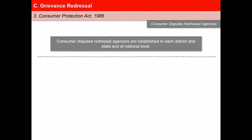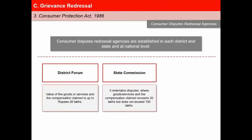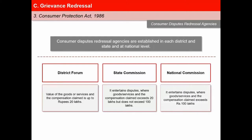Consumer Disputes Redressal Agencies are established in each district, state, and at national level. The District Forum has jurisdiction to entertain complaints where the value of goods or services and the compensation claimed is up to Rs. 20 lakhs. The State Commission is a redressal authority with original, appellate, and supervisory jurisdiction. It entertains appeals from the District Forum and disputes where goods or services and the compensation claimed exceeds Rs. 20 lakhs but does not exceed Rs. 100 lakhs. The National Commission is the final authority with original, appellate, and supervisory jurisdiction. It can hear appeals from the order passed by the State Commission and entertains disputes where goods or services and the compensation claimed exceeds Rs. 100 lakhs. All three agencies have powers of a civil court.